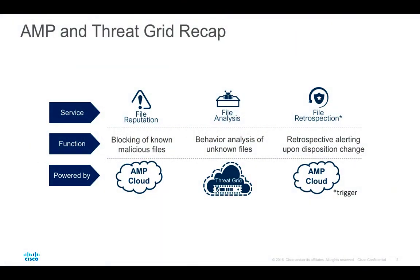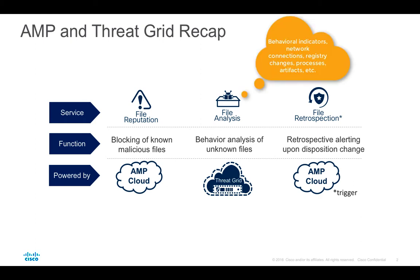Let's start with a quick recap of how file reputation, file analysis, and file retrospection work together in general. File reputation service allows us to capture a file on a network, email, web gateway, or on the endpoint, calculate a hash, and query the AMP cloud to receive a disposition back — either clean, malicious, or unknown. Malicious and clean files are normally not a subject for additional investigations and the policy action can be taken accordingly.